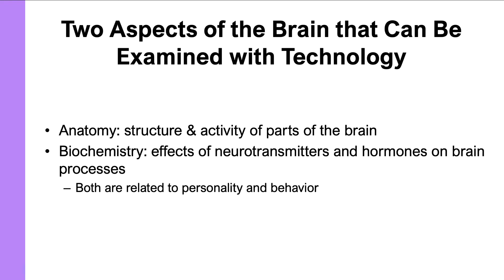In the last part of this introductory lecture, I'm going to briefly mention the ways that personality, behavior, thoughts, and emotions have been related to the physical body and particularly the brain. I'll also introduce the parts of the brain known to have significant relations with personality. Personality neuroscientists have focused on two main ways to connect personality and behavior: the anatomy, structure, and functioning of different brain parts, and the biochemistry — neurotransmitters and hormones — associated with personality.